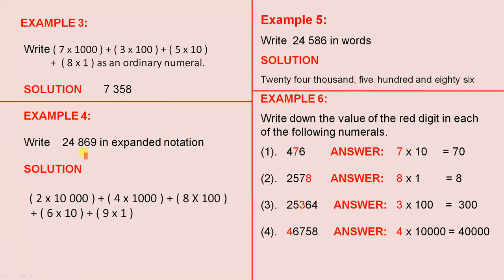Example 4. Write 24,869 in expanded notation. Here we have 5 digits, and we know the place values of each digit. So we have the 2, the 4, the 8, the 6, and the 9. We'll just quickly check the place values, and they are correct.